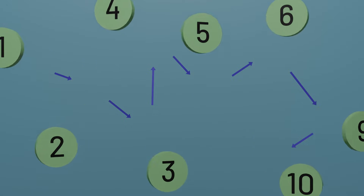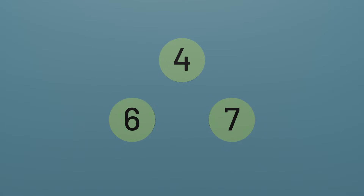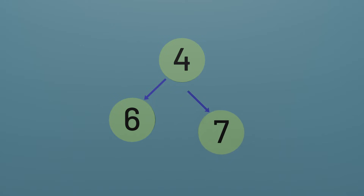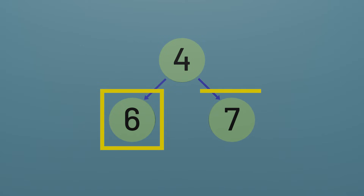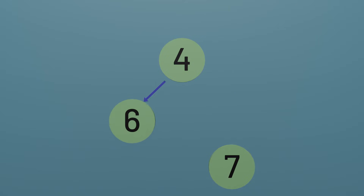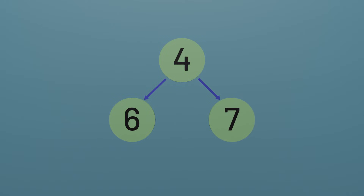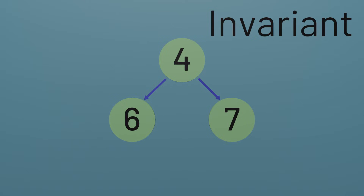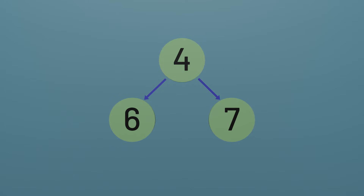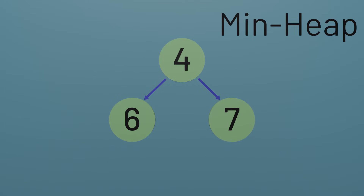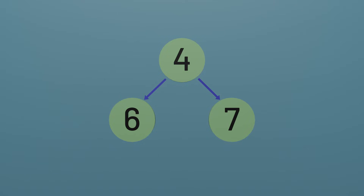This is where binary heaps come in. Binary heaps also consist of nodes of data, but they're structured as a binary tree. That means instead of each node pointing to a single other node, nodes can have up to two so-called child nodes — a left child and a right child. A node is allowed to have no children, just a left child, or both a left and right child. Each node in a binary heap also obeys an invariant — a property that will always be true. In a min heap, the value of any node must be less than or equal to the values of its child nodes. This means the node with the smallest value must be at the top, or root, of the tree, making it easy to find the minimum value just by looking at the root.